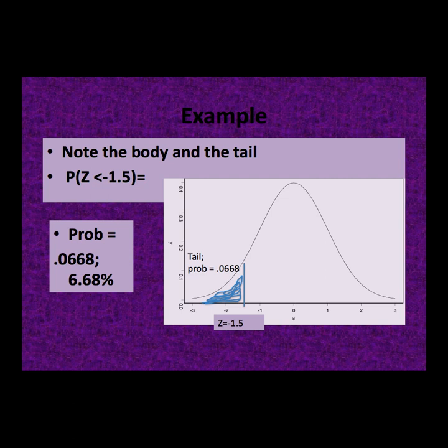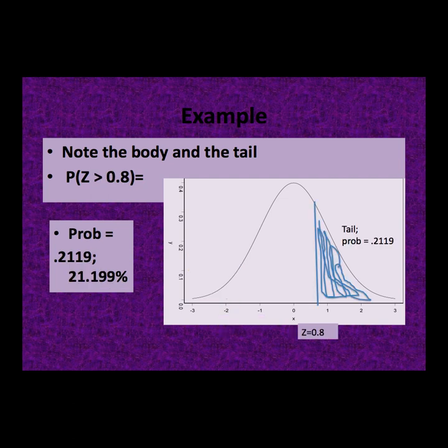Understanding the notation and writing the notation correctly is important in this class. What is the probability that z is greater than .8? We have a positive z-score a little bit less than 1, and we shade the probability at .8 and above. Looking up a z-score of .8, the smaller probability or the proportion in the tail is .2119, meaning 21.19% of the data fall above a z-score of .8.